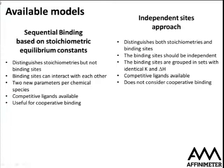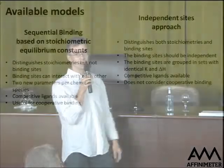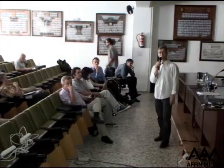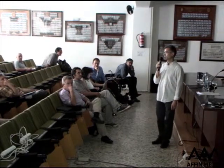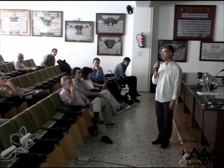When do you use the independent sites approach or the sequential binding based on stoichiometric equilibrium constants? The first model is able to distinguish stoichiometries but not individual binding sites, while the second approach distinguishes both stoichiometries and binding sites. In the first approach binding sites can interact with each other, but in the second approach the binding sites must be independent. In the first approach you have new parameters for each chemical species, while in the second we can group binding sites into sets with identical equilibrium constants and delta H. Both approaches can deal with competitive binding. The first approach is useful for cooperative binding; the second does not consider cooperative binding since all sites are independent.